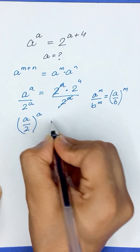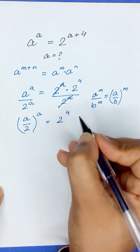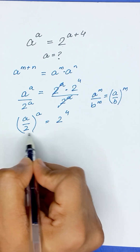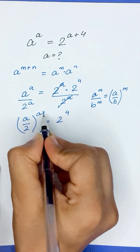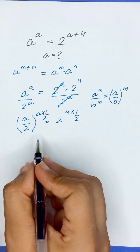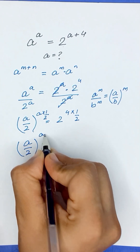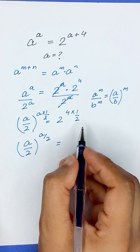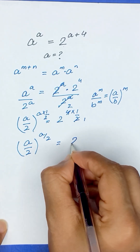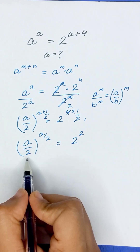So a divided by 2, whole to the power a, is equal to 2 to the power 4. Now to remove the power, we will raise both sides to the power 1 over a. The right-hand side becomes 2 to the power 4 times 1 over a, which simplifies to 2 to the power 2.